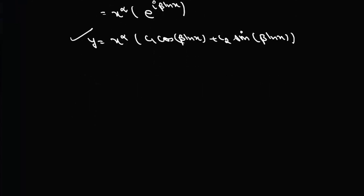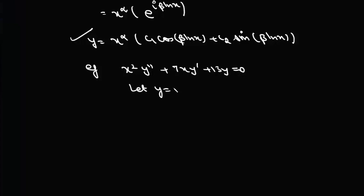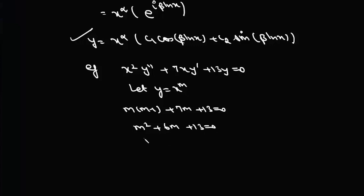For an example with complex roots, consider x²y'' + 7xy' + 13y = 0. Letting y = x^m gives m(m−1) + 7m + 13 = 0, or m² + 6m + 13 = 0, which is (m+3)² + 4 = 0. So m = −3 ± 2i, giving α = −3 and β = 2. We can directly write the solution as y = x^(−3)(c₁ cos(2 log x) + c₂ sin(2 log x)).